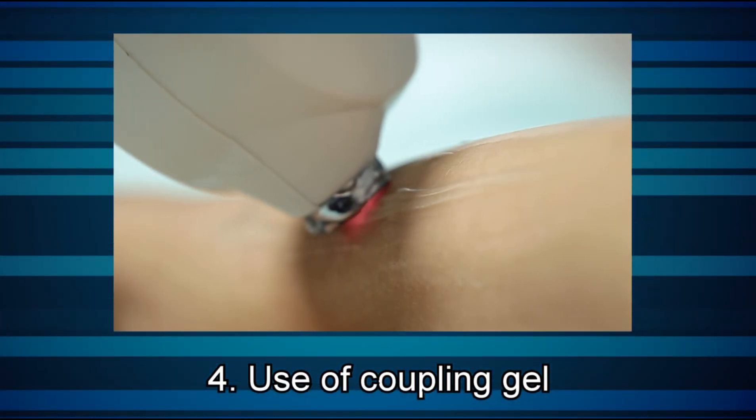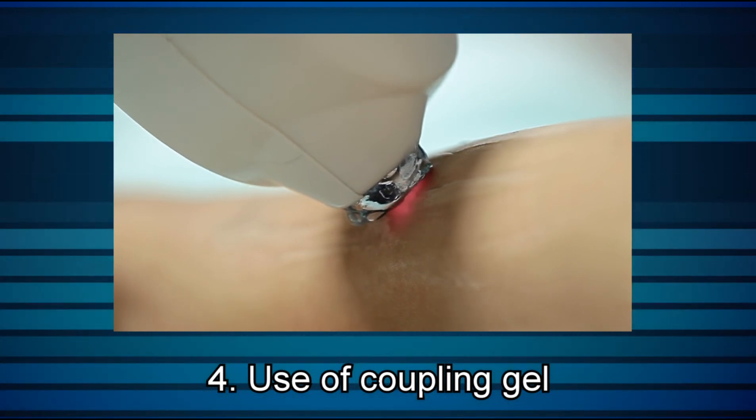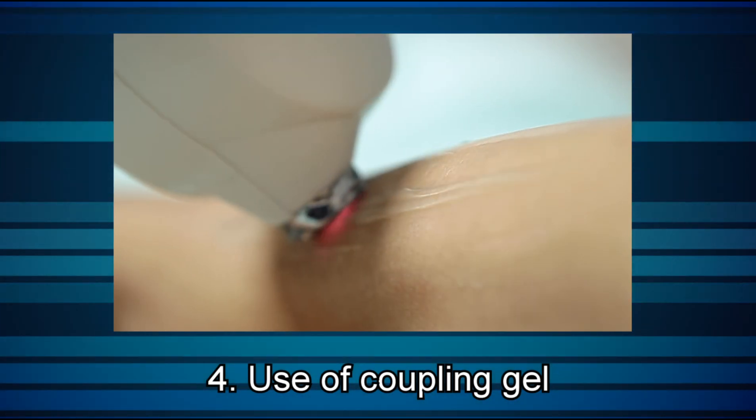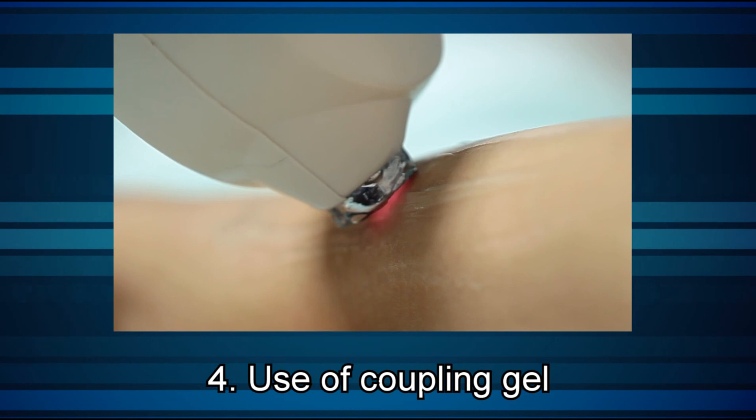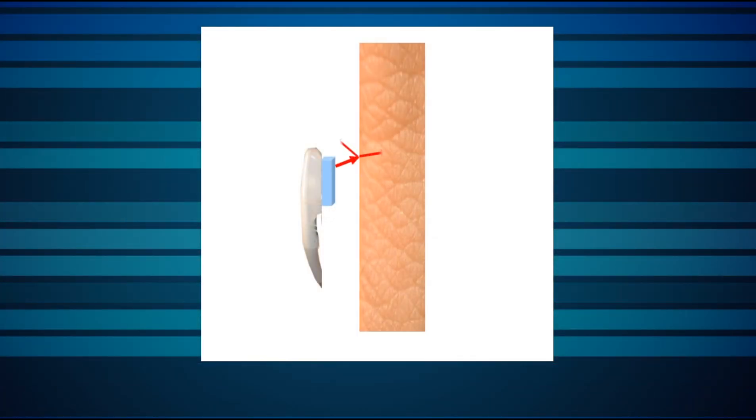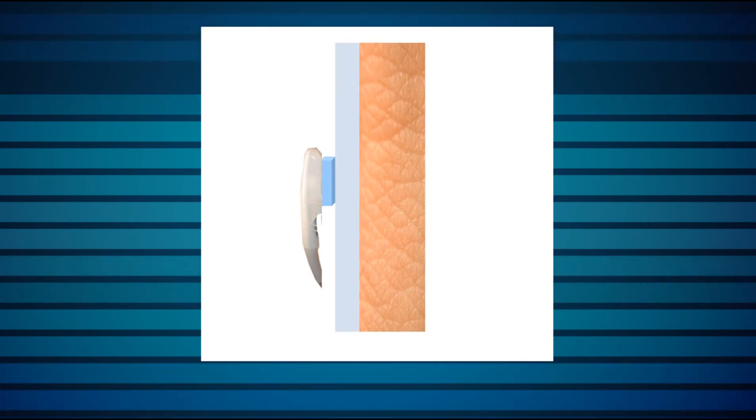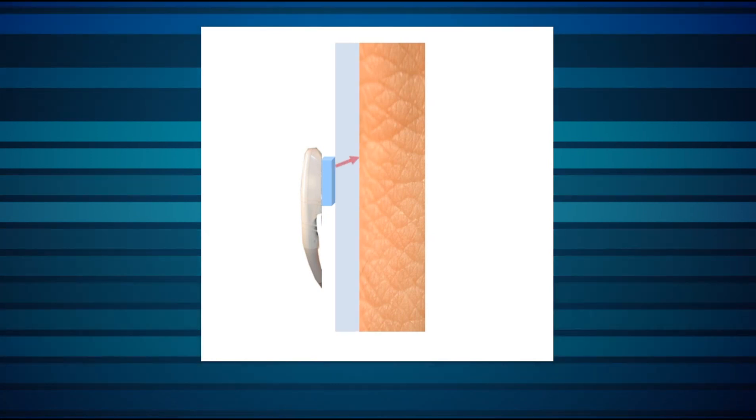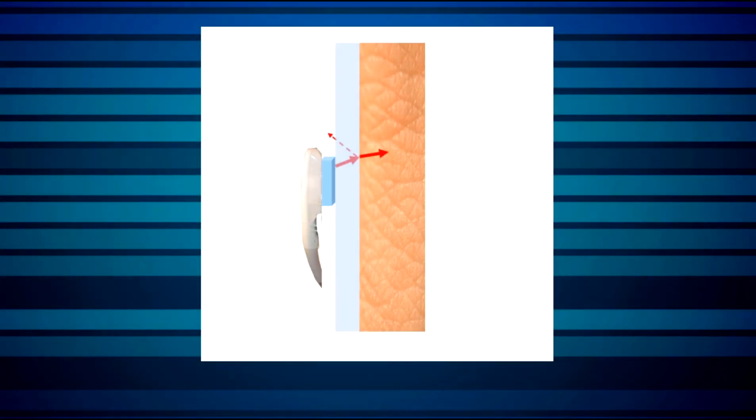4. Many, if not most, IPL applications involve the use of optical coupling gel on the patient's skin to reduce reflective losses as the light goes from one optical medium, air, to another, skin, by reducing the step size of the refractive index. For the measurement to have maximum clinical meaning, it should be performed under similar optical conditions to those of the IPL's clinical use.